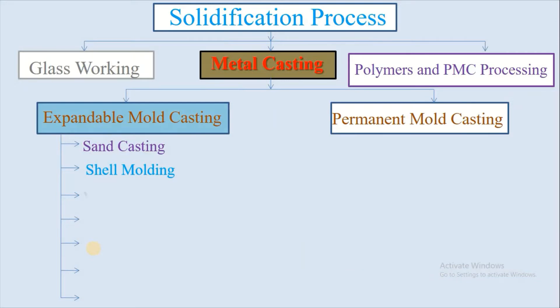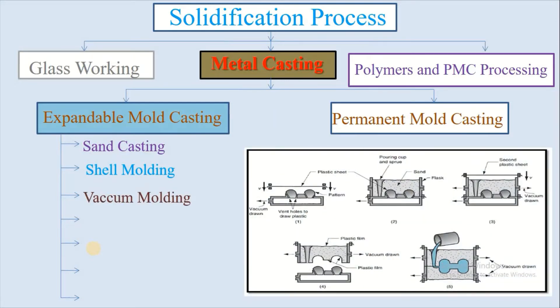The next expandable mold casting is vacuum molding, sometimes referred to as vacuum forming. It is a straightforward molding process that uses vacuum pressure to press a sheet of heated and stretched plastic into a single surface mold. Numerous household items are made from vacuum-formed plastic: the plastic bathtub in your bathroom, plastic utensils and appliances found in various kitchens, and garden equipment stored in the shed.